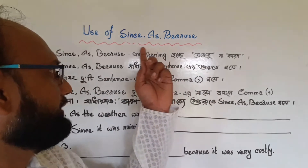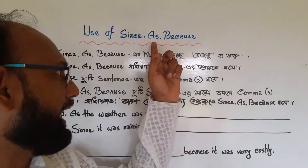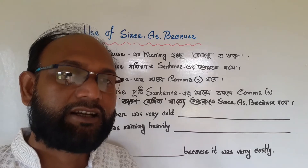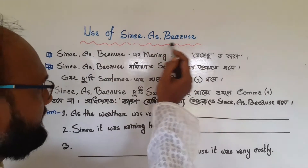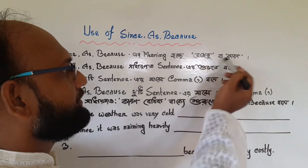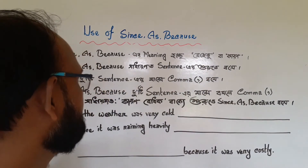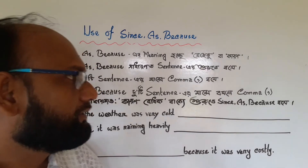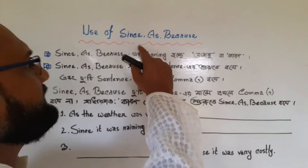Hey learners, look at this — use of since, as, because. Since, as, and because are subordinate conjunctions. The Bengali meaning of these words is 'Jetu, Ba, Karun.' Generally, since, as, and because are used at the beginning of the sentence. If these words are used at the beginning of the sentence, we must use a comma between the two sentences.